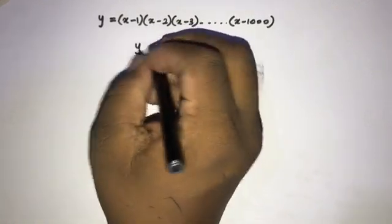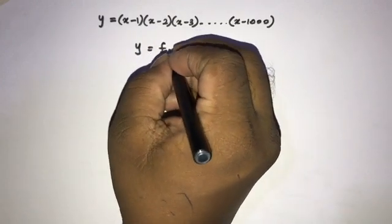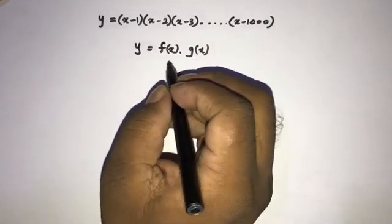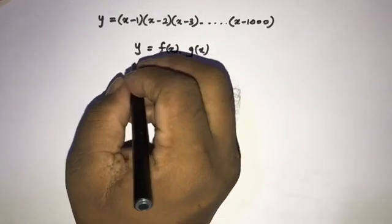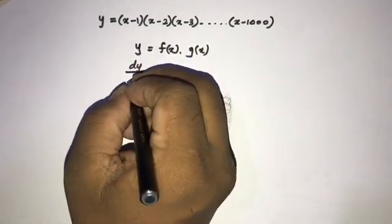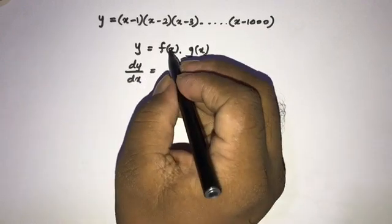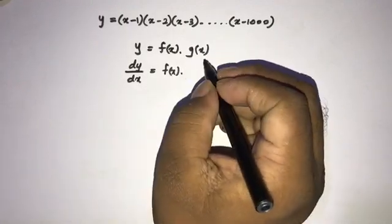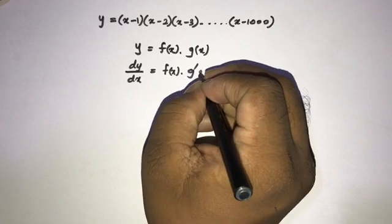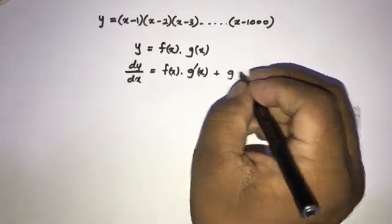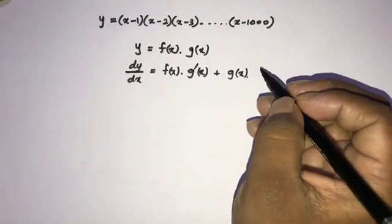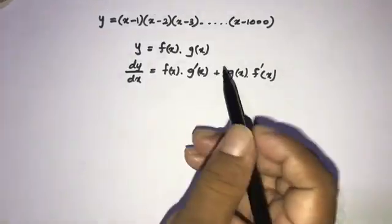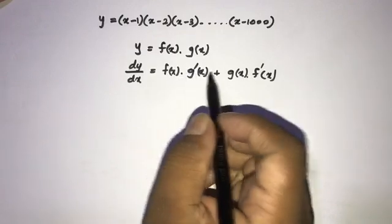If y is equal to f(x) times g(x), then the first derivative dy/dx is equal to the first function f(x) times the derivative of the second function g'(x), plus the second function g(x) times the derivative of the first function f'(x).